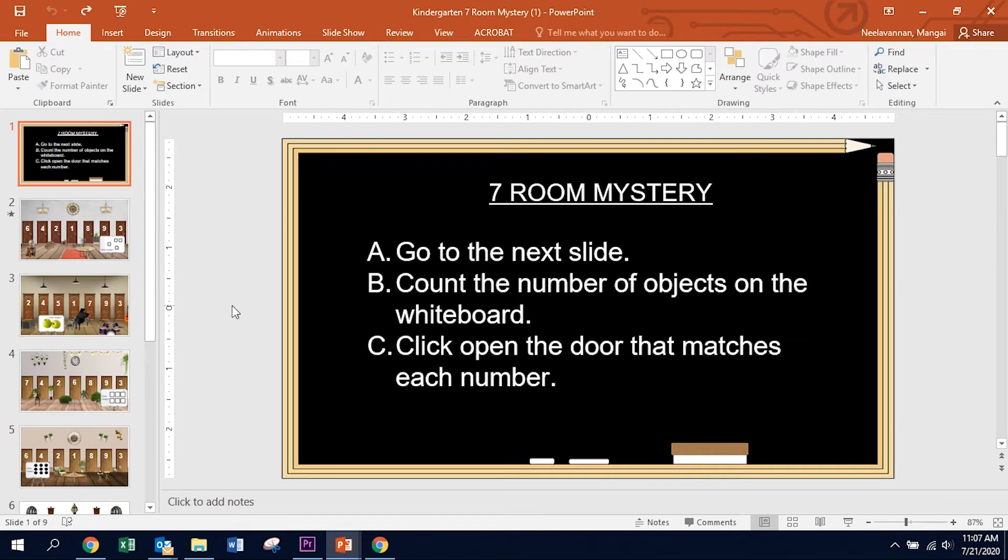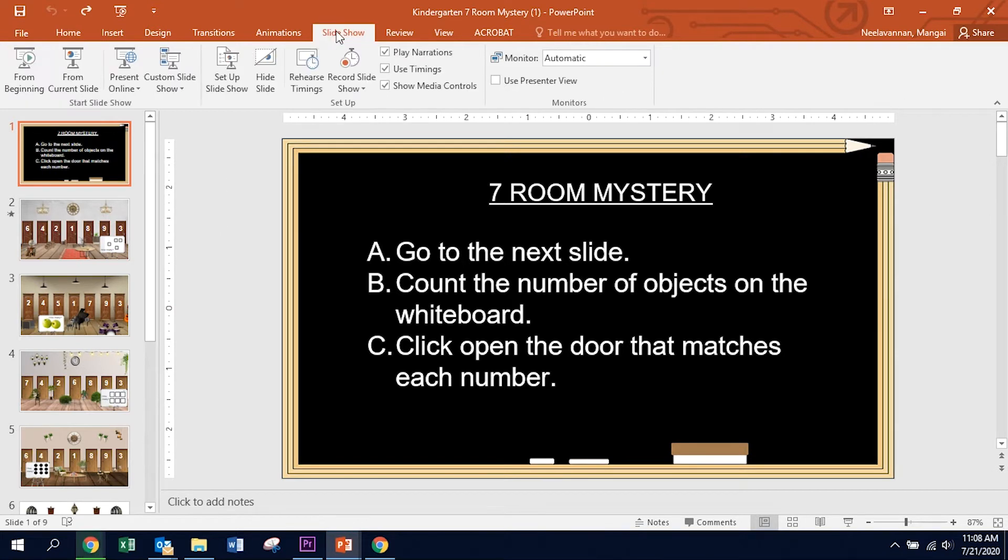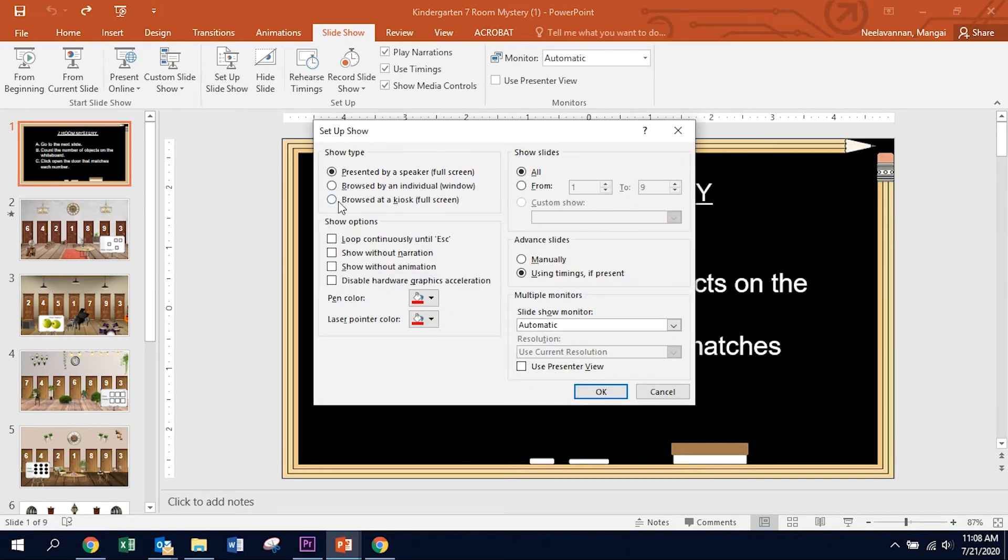So the way to disable the space bar when advancing the slide is the option we are going to use: the kiosk. Go into Slideshow, Setup Slideshow, and see this button that says Browse at a Kiosk Fullscreen. That is the option we are going to use to disable the space bar.